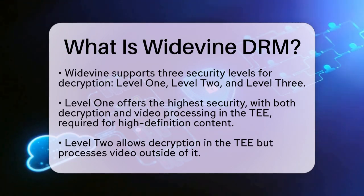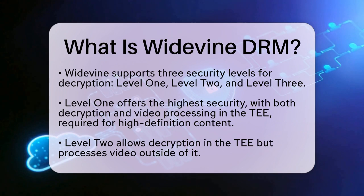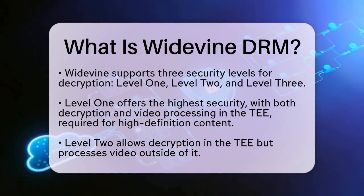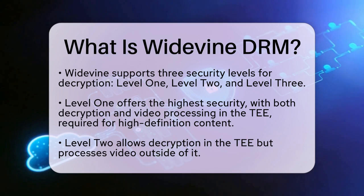The second level, Level 2, allows only decryption to occur within the Trusted Execution Environment, while video processing happens outside. Finally, Level 3 offers the lowest security. Both decryption and processing occur in software without Trusted Execution Environment protection, allowing only standard definition playback.